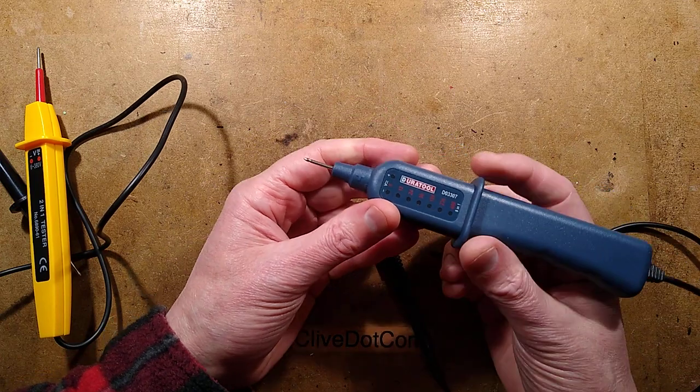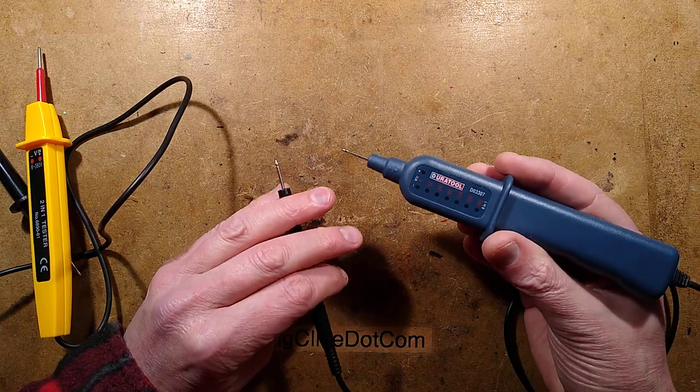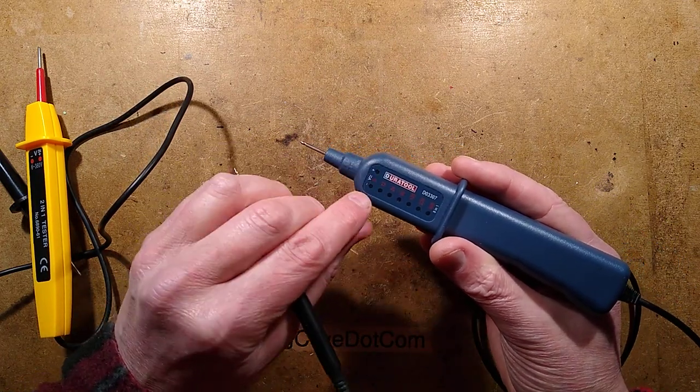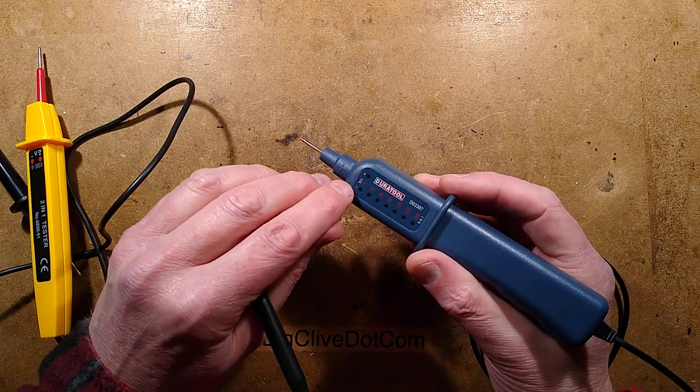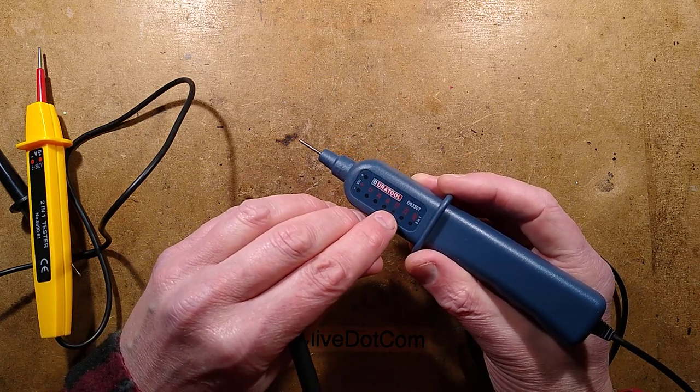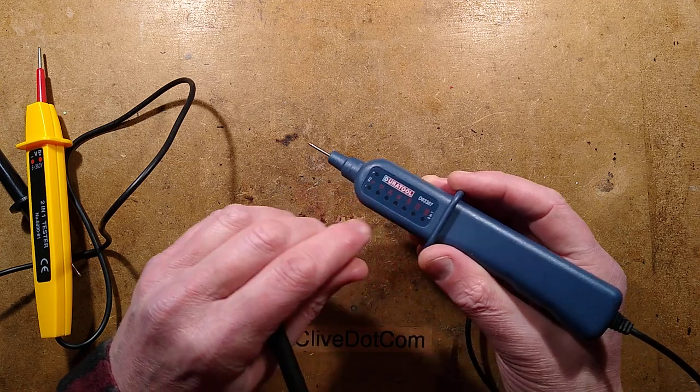This one is more sophisticated. It shows the voltage and the polarity but it has it in steps, so it's got 6, 12, 24, 50, 120, 230 and 400 volts, so it's more useful.